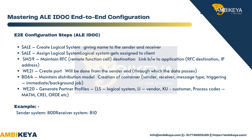Step 4 — WE21: Create a port from the sender end, through which the data passes. Step 5 — BD64: Maintain distribution model, including creation of container, sender, receiver, message type, and triggering (immediate or background job). Step 6 — WE20: Generate partner profiles. Partner types include LS (Logical System), LI (vendor), KU (customer), with process codes like MATM, CRE1, ORDE, etc.